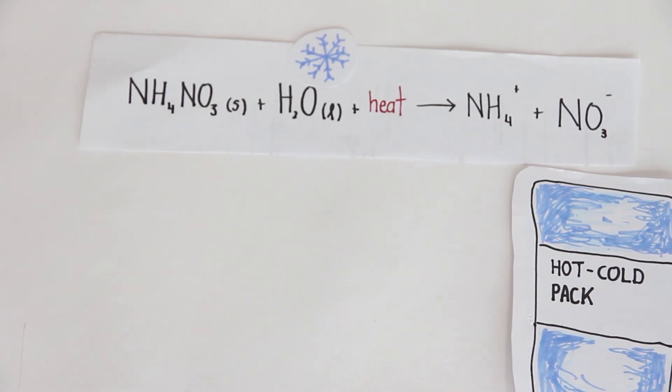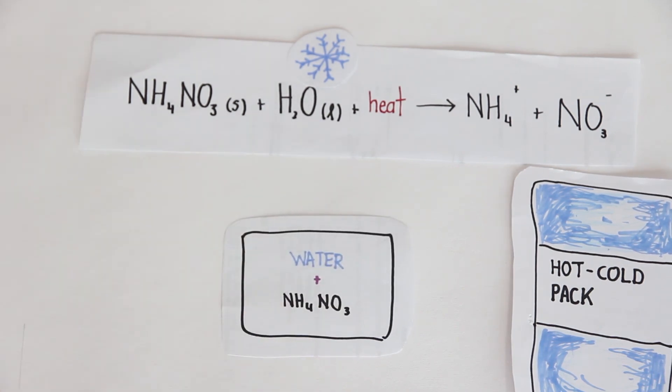To begin the endothermic reaction, users are required to twist, squeeze or bang the pack. The action breaks a temporary seal between the inner and outer pouches, releasing the dry chemical ammonium nitrate into the water.